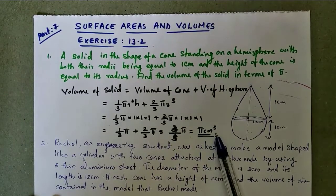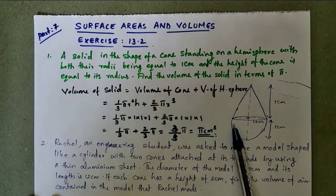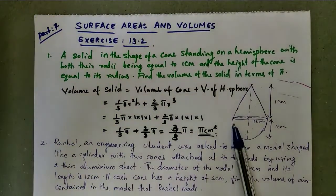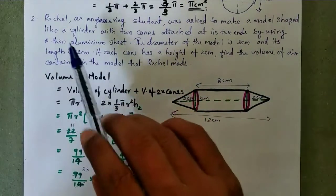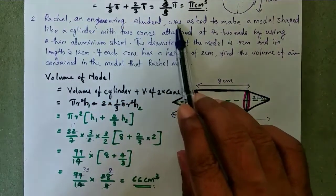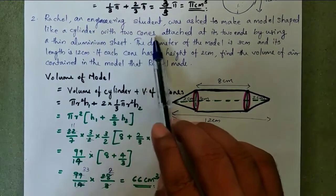Then 3/3 π, three by three equal to one, π centimeter cube. So this is the answer: π centimeter cube is the volume of this given solid. Okay, the next question: Rachel, an engineering student, was asked to make a model shaped like a cylinder with two cones attached at its two ends by using a thin aluminum sheet.